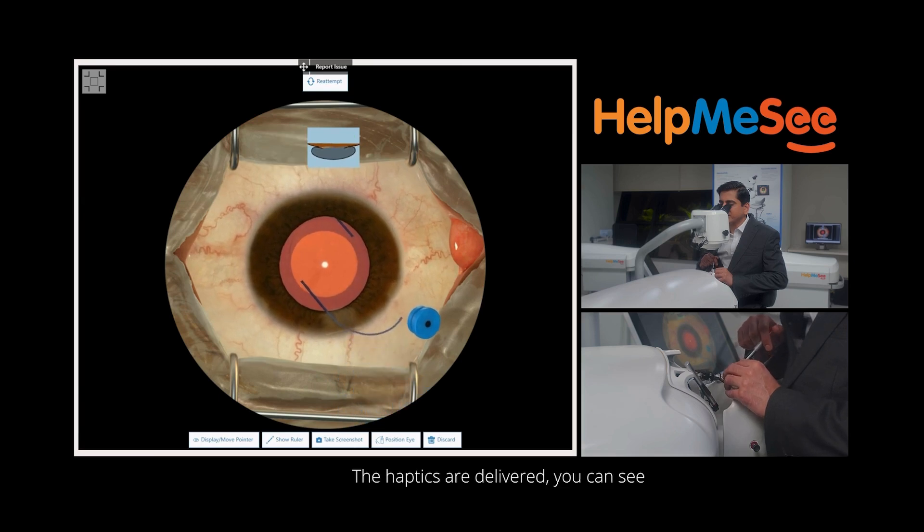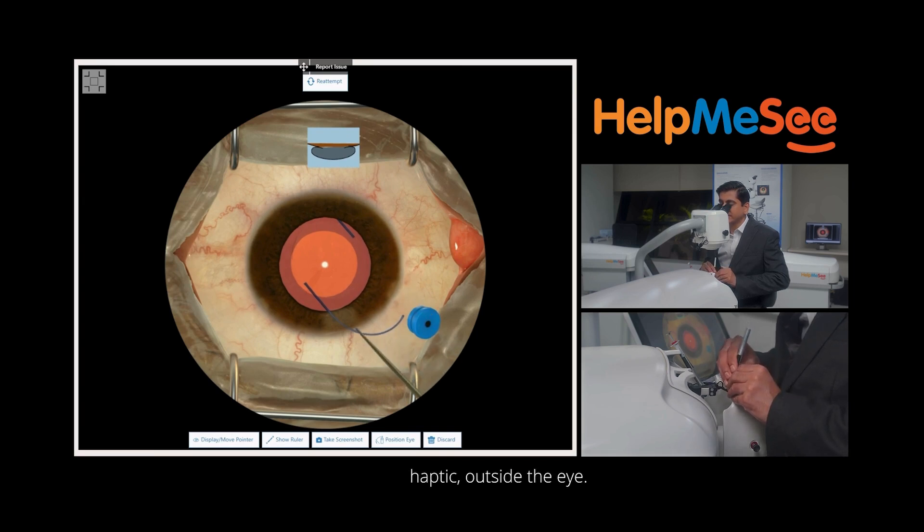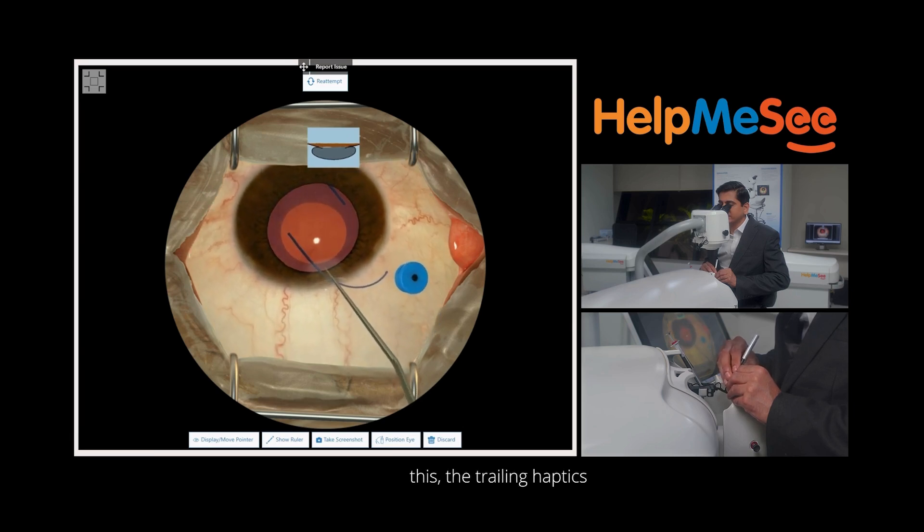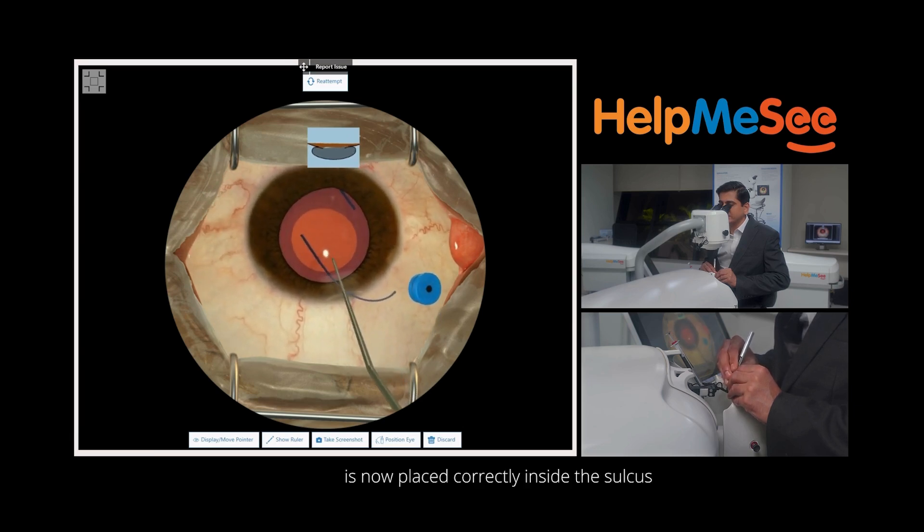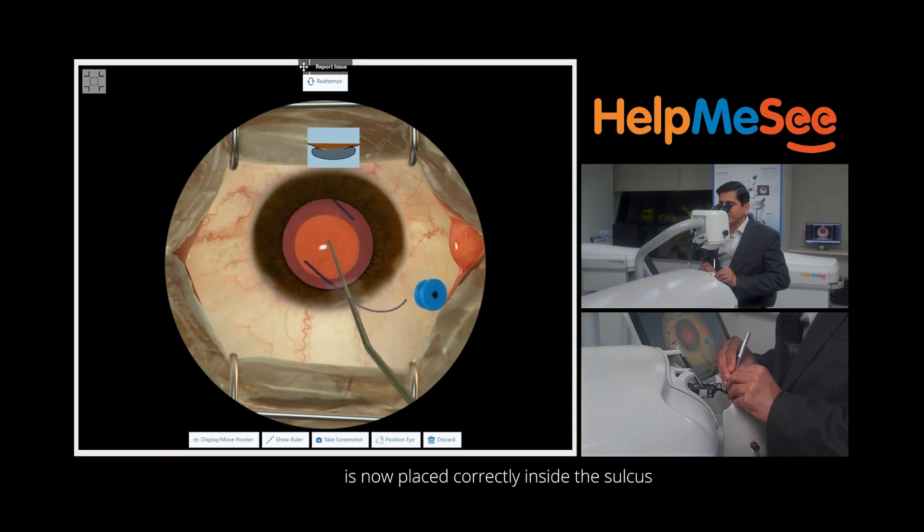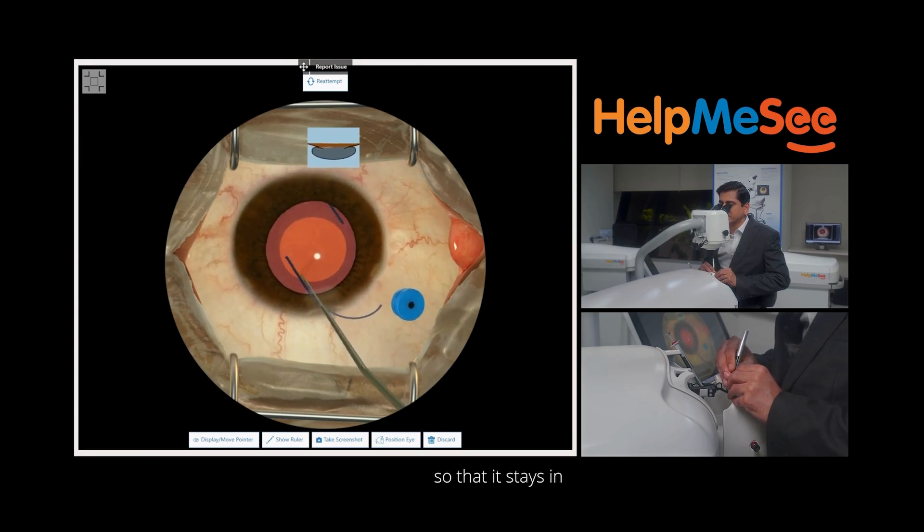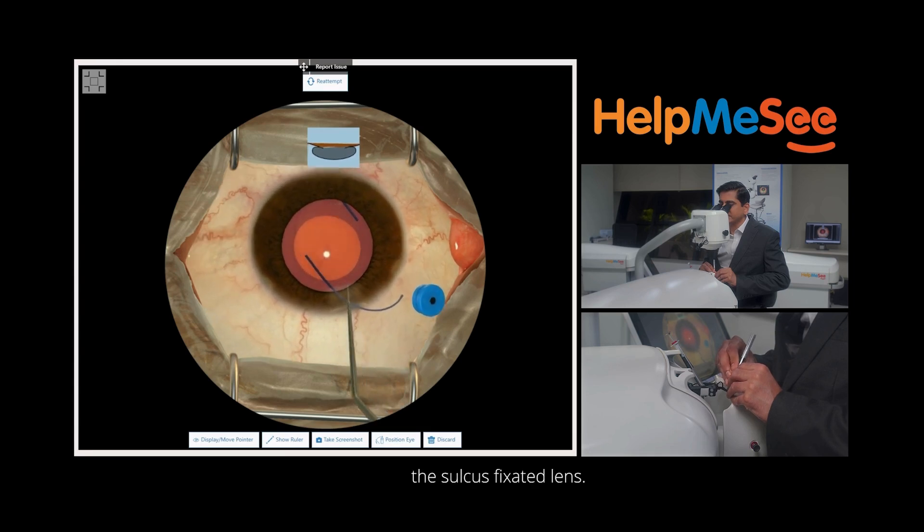The haptics are delivered. You can see that the lens is nicely delivered with the trailing haptic outside the eye. We have to dial it inside and ensure that once we have dialed this, the trailing haptic is now placed correctly inside the sulcus so that it stays as the sulcus fixated lens.